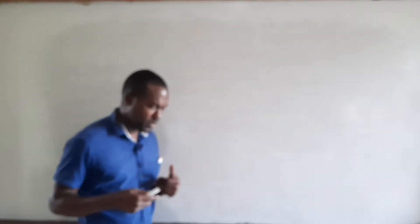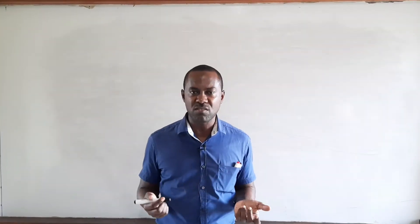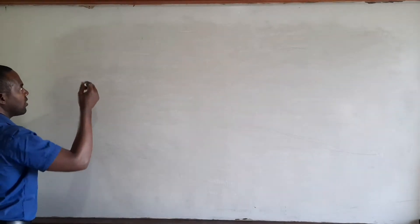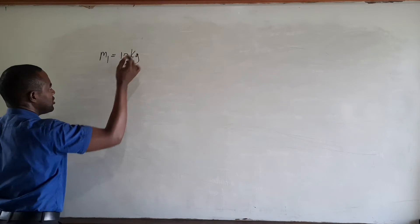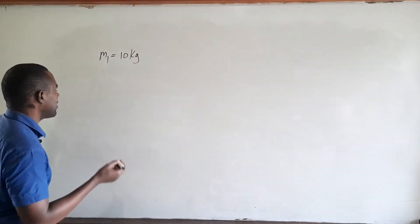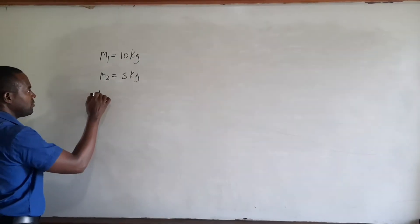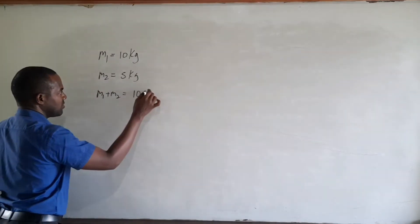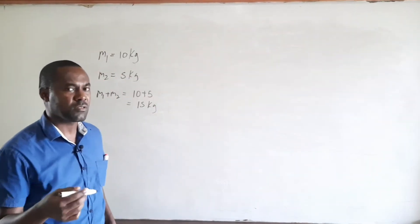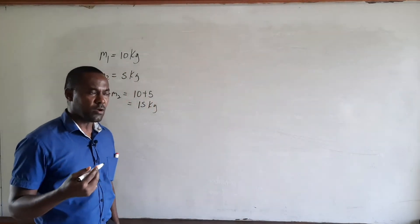Before we do that, let's talk briefly about scalar addition. Whenever we want to add two scalars we simply add their magnitudes together. For instance, if you go to the grocery and you buy 10 kilograms of sugar — m1 equals 10 kg — then you buy another 5 kilograms of sugar, m2 equals 5 kg. In total you'd have m1 plus m2 equals 10 plus 5, which gives us 15 kilograms of sugar.